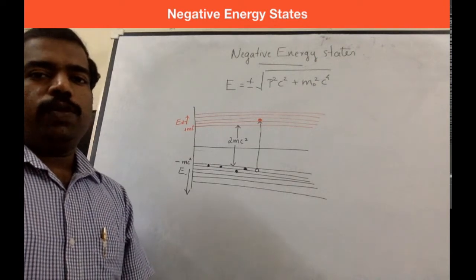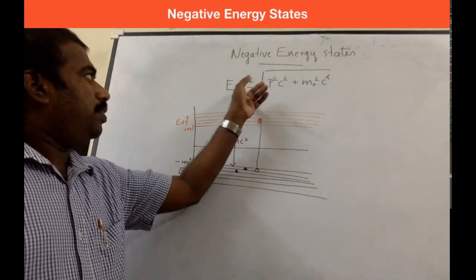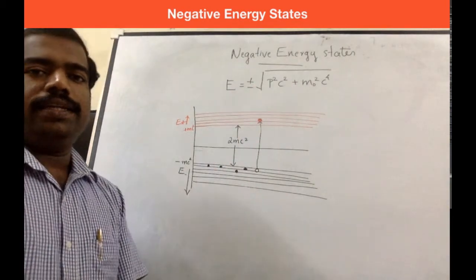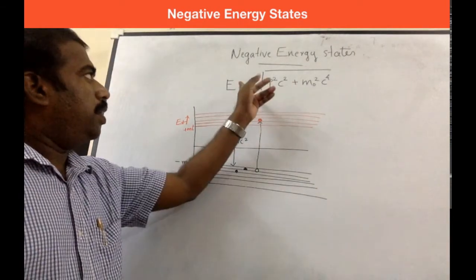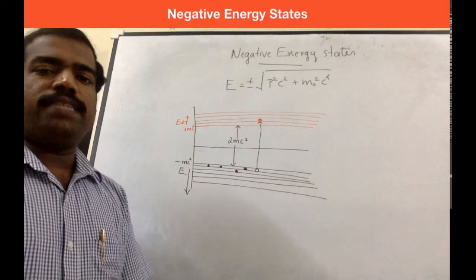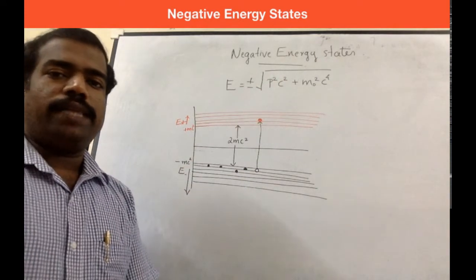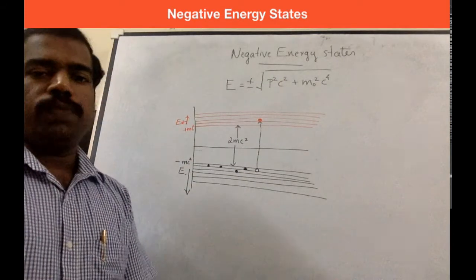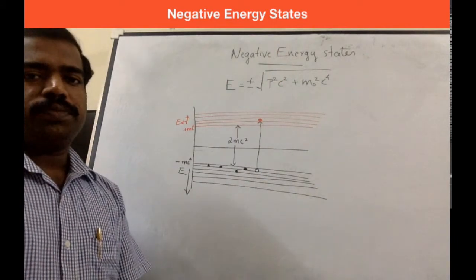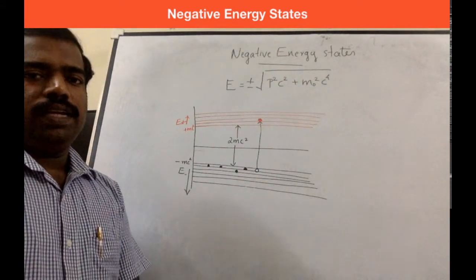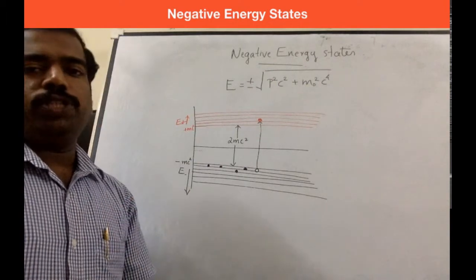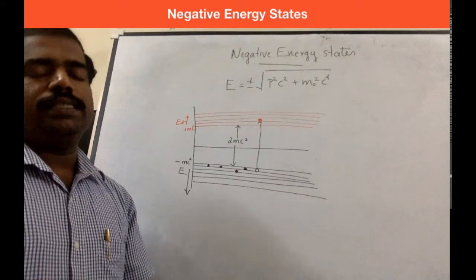In our previous session we learnt the relativistic energy expression in Dirac's theory as plus or minus the square root of p squared c squared plus m₀ squared c to the power 4. This is the relativistic energy expression, and this equation makes it evident that it has both positive as well as negative energy states.